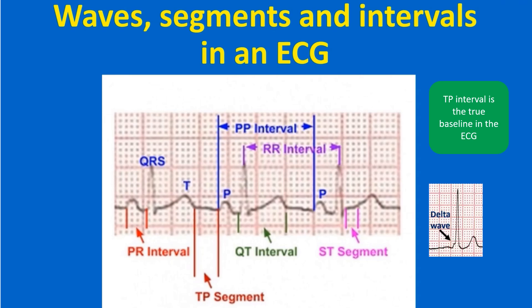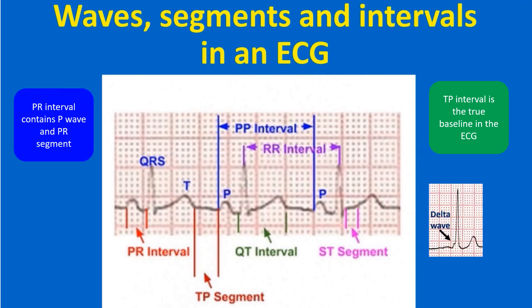Intervals contain one or more waves and a segment. The PR interval contains the P wave and is measured from the onset of the P wave to the onset of the QRS complex. The QT interval contains the QRS complex, ST segment, and T wave, measured from the onset of the QRS complex to the end of the T wave. The PP interval is measured from the onset of one P wave to the onset of the next P wave. The RR interval is measured from the onset of one QRS complex to the onset of the next, or simply as the interval between the peaks of two consecutive R waves.